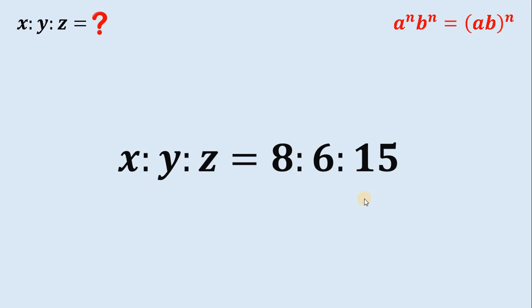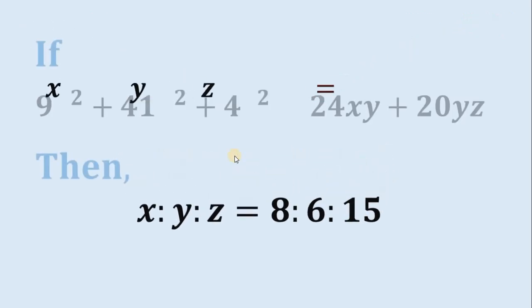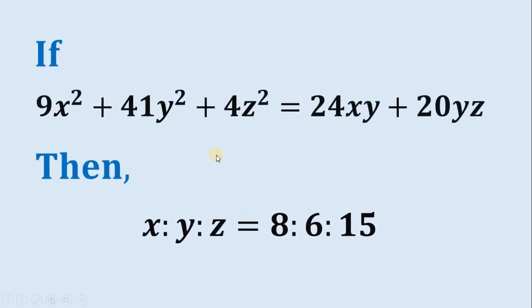Therefore, our answer to this question — what is the ratio of x, y, and z — is 8 is to 6 is to 15. And as always, we are done.